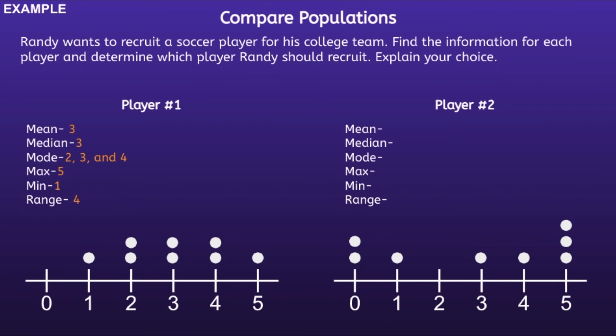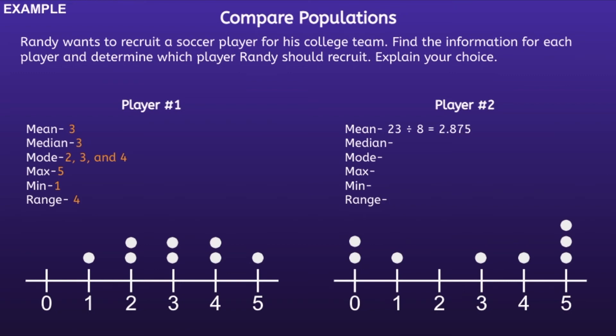Now moving on to player number 2. Let's start with the mean. In order to find the mean, I have to add up all the terms and divide by the total number of terms. Which would be 0 plus 0 plus 1 plus 3 plus 4 plus 5 plus 5 plus 5, and then we would divide that by 8, since there are 8 total terms. That will leave us with 23 divided by 8. And 23 divided by 8 is equal to 2.875. So the mean for player 2 would be 2.875.